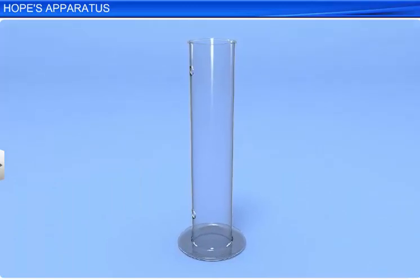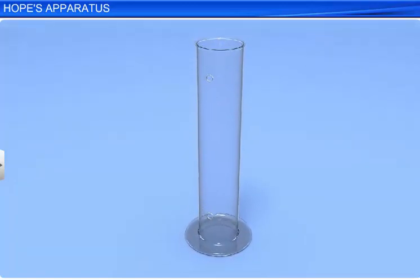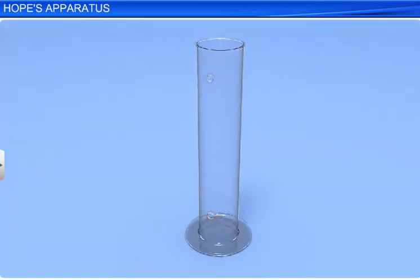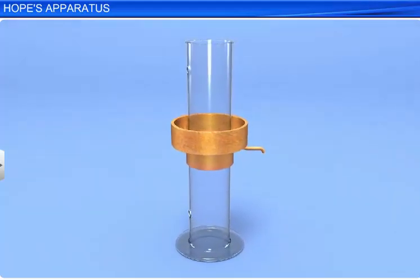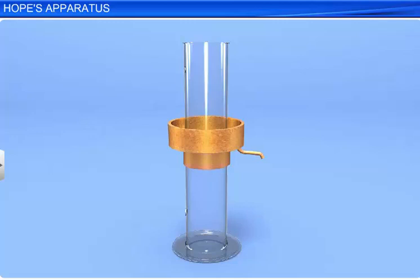Hope's Apparatus consists of a long cylindrical jar with two openings on the side, one near the top and the other near the bottom to fit thermometers in each of these openings. A metallic cylindrical air-tight trough with an outlet is also fitted onto the jar on its central portion.